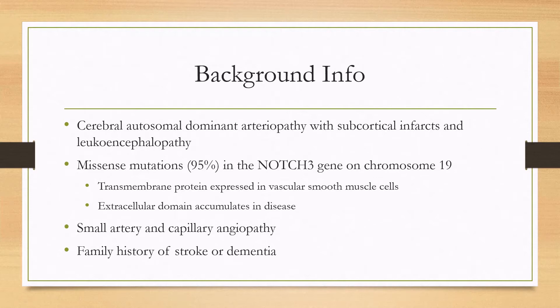Probably the most commonly tested concept about CADASIL is its genetics. It's caused by mutations in the NOTCH3 gene on chromosome 19, and most commonly these are missense mutations. NOTCH3 encodes a transmembrane protein that's expressed in vascular smooth muscle cells, and in the disease the extracellular domain accumulates, causing angiopathy in the small arteries, arterioles, and capillaries.